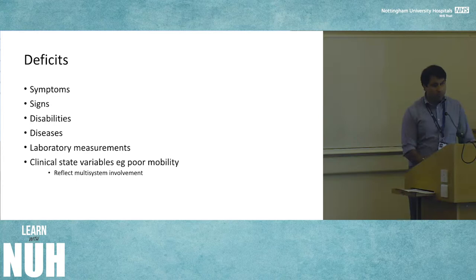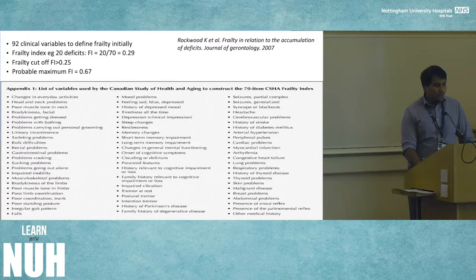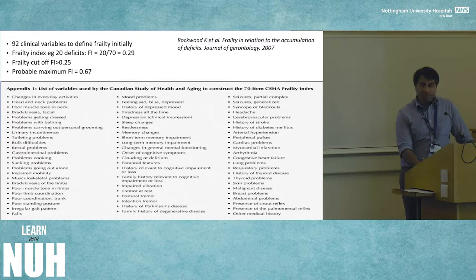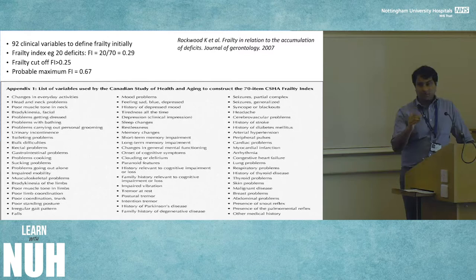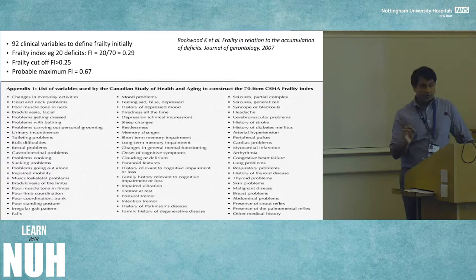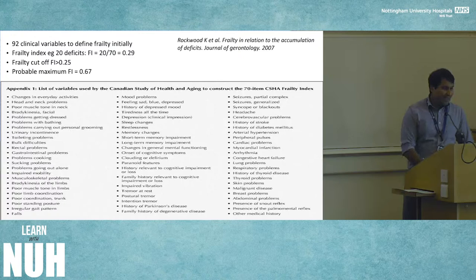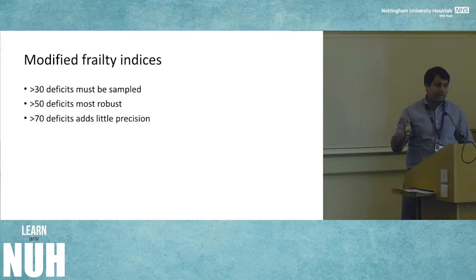Rockwood's original list of deficits was 92 items; one of the early frailty indexes comprised 70 points. The index works by counting up how many deficits the individual you're assessing has, giving a fraction from zero to one. If the score is more than 0.25 — a quarter of the list — you're deemed frail. There is a physiological maximum of about 0.67, where having more than two-thirds of those issues is barely compatible with life. We now know indexes need more than 30 items to be robust, with over 50 being particularly robust, but more than 70 adds no extra precision.